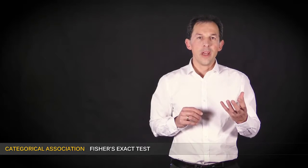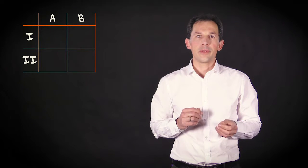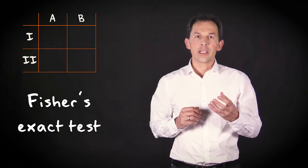When expected frequencies in a contingency table are small, you cannot use a chi-squared test for independence. However, in case of a 2x2 table, there's an alternative test that is designed for small samples. It's called Fisher's Exact Test.